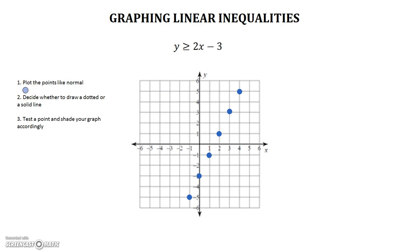Step two, decide whether to draw a dotted or a solid line. You can easily tell this by looking at the inequality sign in your original equation. This is greater than or equal to. That or equal to component of it is what tells you that we're drawing a solid line here. If it was just plain greater than without the equal to line underneath, then it would be a dotted line.